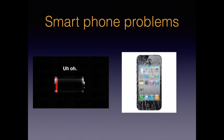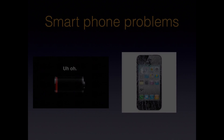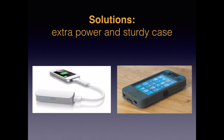Before we get into the good stuff, I'll start with a little disclaimer. There are two main problems with using your smartphone in the backcountry. One is battery life, and the second is damage from dirt, impact, or water. Here are two solutions: some kind of extra power source and a sturdy case for your phone.